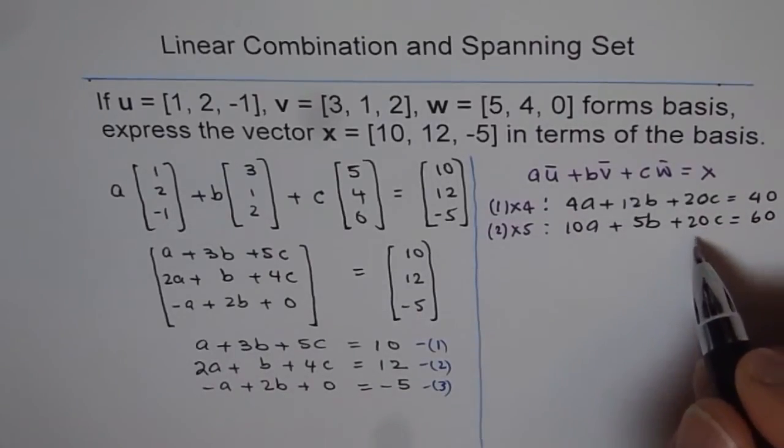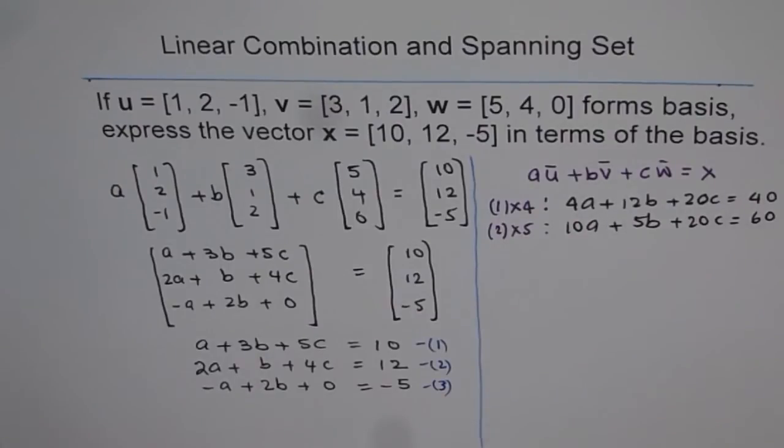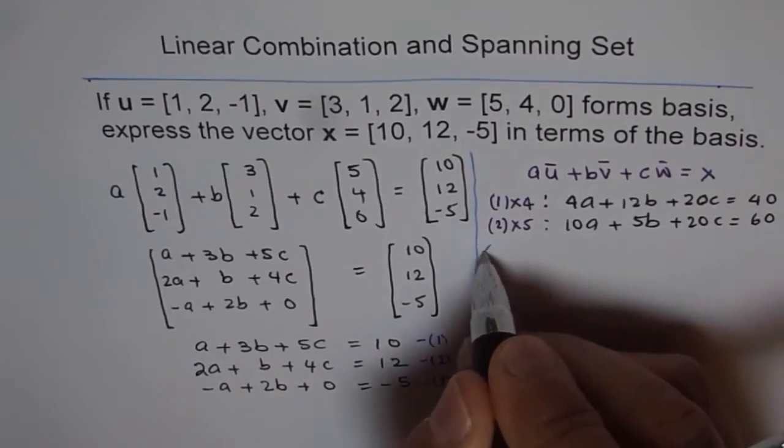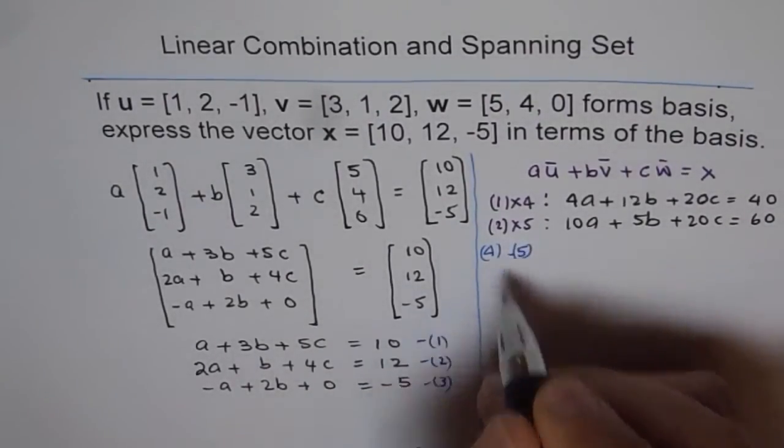Now to eliminate C, we can subtract one from the other. So let me call these equations as 4 and 5. So these equations are 4 and 5, and now what I will do is, I will do 4 minus 5.